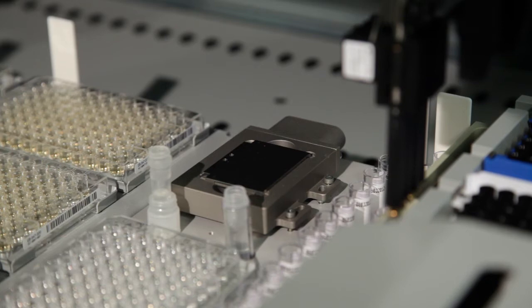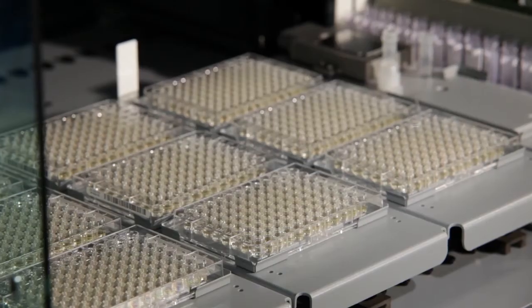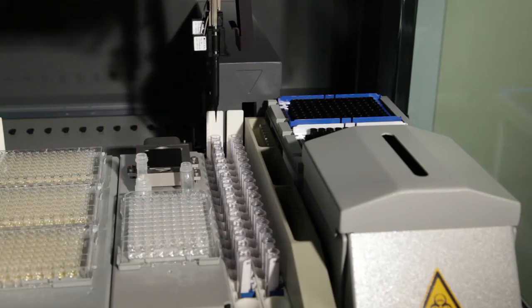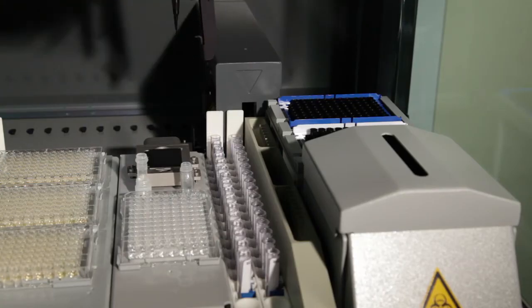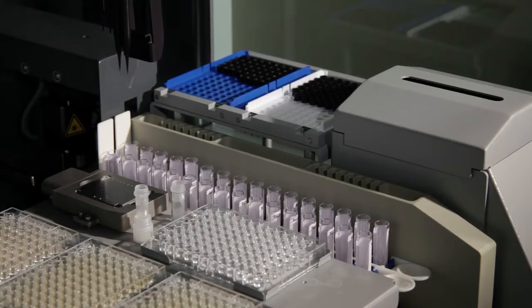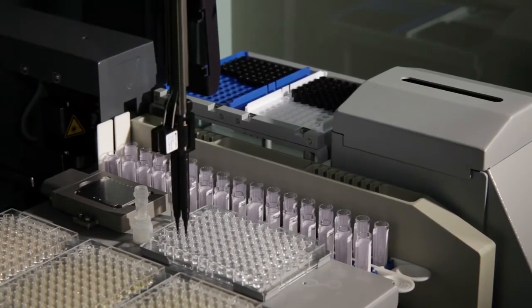Secondly, the allocation of the samples to the MALDI-TOF target and to the Micronaut AST plates is performed. After homogenization, an aliquot of the sample is spotted on the MALDI-TOF target and is also used for the inoculum preparation of the AST testing.